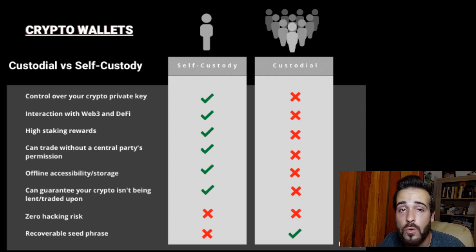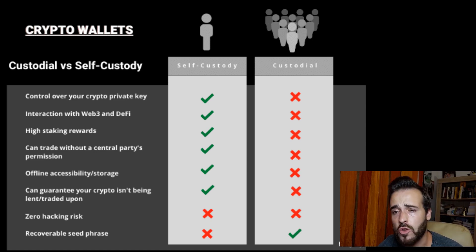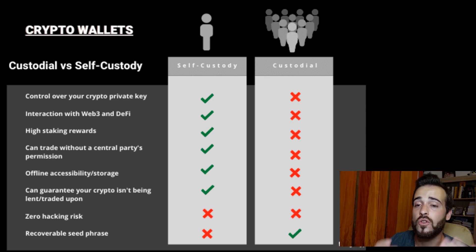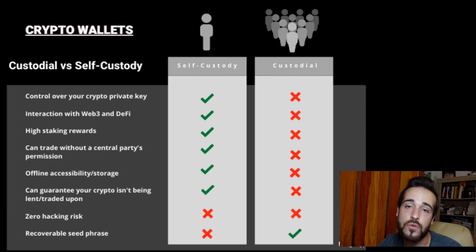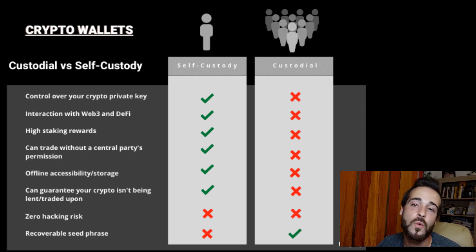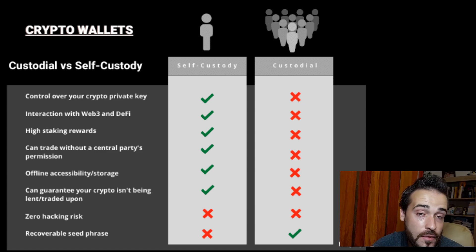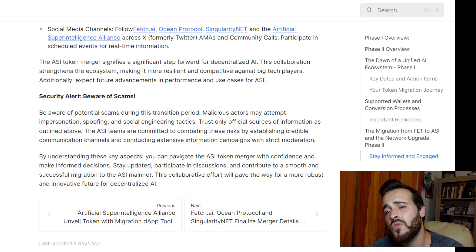There are real risks to holding tokens on a centralized exchange. They are not really your tokens because you're not in control — the exchange is. If something happens such as robbery, bankruptcy, or fraud, you're at risk of losing your crypto. That's why it's always better to self-custody your crypto — it's the safest way, and you're not subject to any third-party risks. If you don't have a self-custody wallet, definitely consider it during this process.